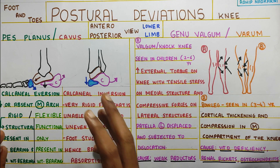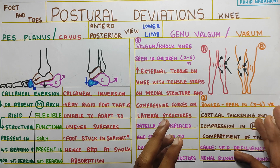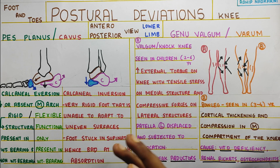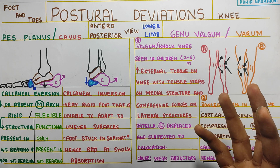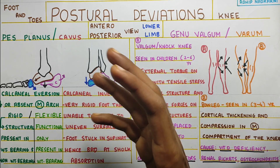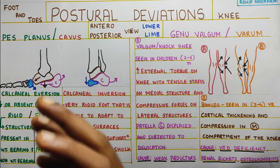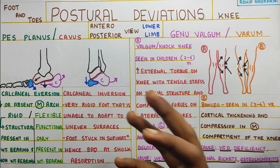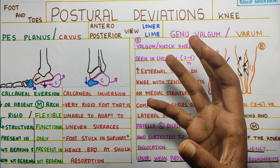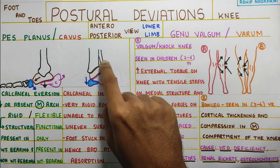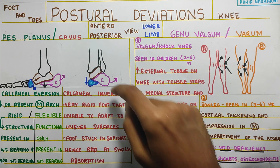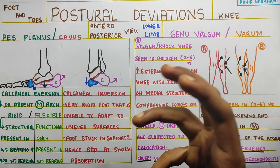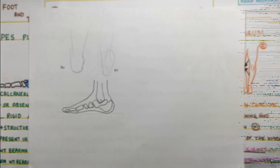I have covered these topics under ankle biomechanics and knee biomechanics separately, but in this video we will focus more on the observation part of it. Starting with pes planus — the flat foot. What happens here is the calcaneum goes for eversion. To give you a better perspective, I drew this diagram.